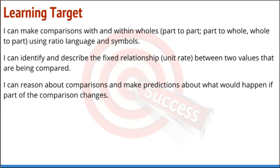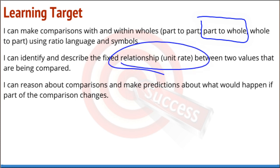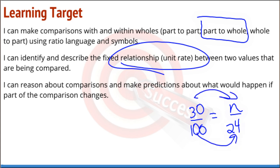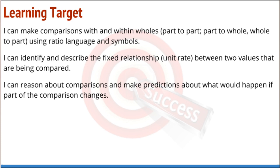Back to the learning targets: as we work with percents, we're definitely working with part-to-whole ratios. We have this fixed relationship — scale to the largest possible units and work from there. We're finding equivalent ratios, making comparisons, and predicting what happens when these parts change. That concludes Module 1, Lesson 26. Lots of stuff to think about — if you've got questions, make sure you talk to your teacher, and make sure you complete your problem set.